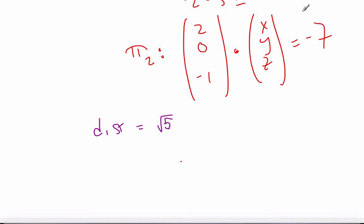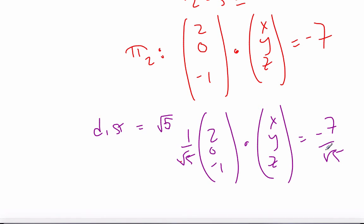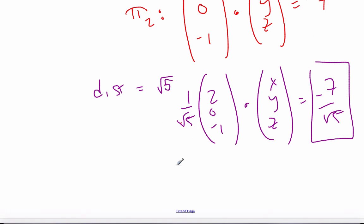So I'm going to multiply this equation by 1 over root 5, 2, 0, minus 1, dot x, y, z, equals negative 7 over root 5. And so this is the distance to the origin from plane 2.